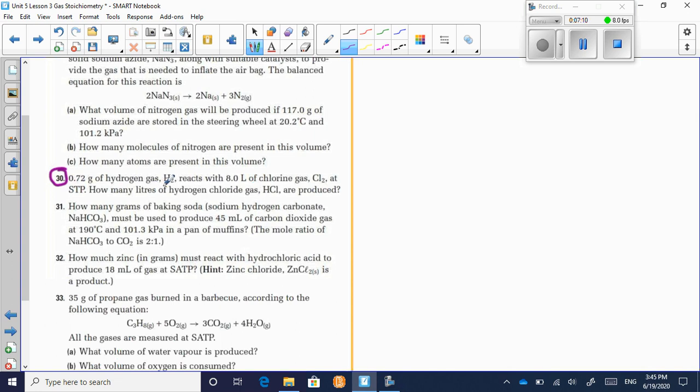You're given an amount of hydrogen gas in grams, but also an amount of chlorine gas in liters. So you can convert those both to moles at STP. It'll be H2 plus Cl2 makes HCl and you'll need a 2HCl.